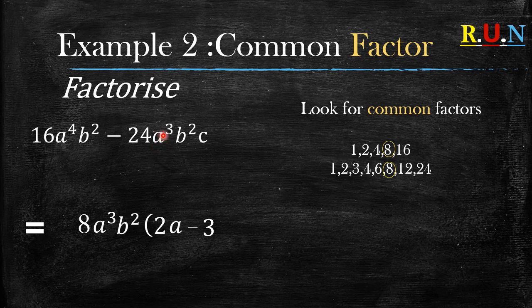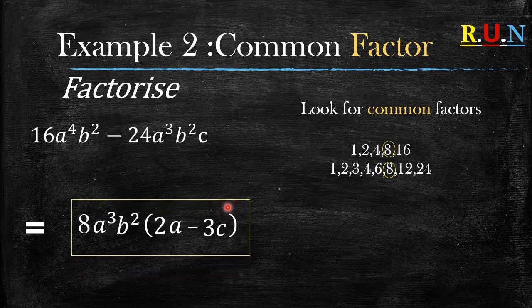Negative 24 divided by 8 equals negative 3. a to the power 3 divided by a to the power 3: 3 minus 3 equals 0, so they cancel out. b squared divided by b squared: 2 minus 2 equals 0, they cancel too. We have c remaining, so we write c next to the negative 3 and close our bracket. This is our answer. To test, multiply the bracket out to confirm you get back the original expression.